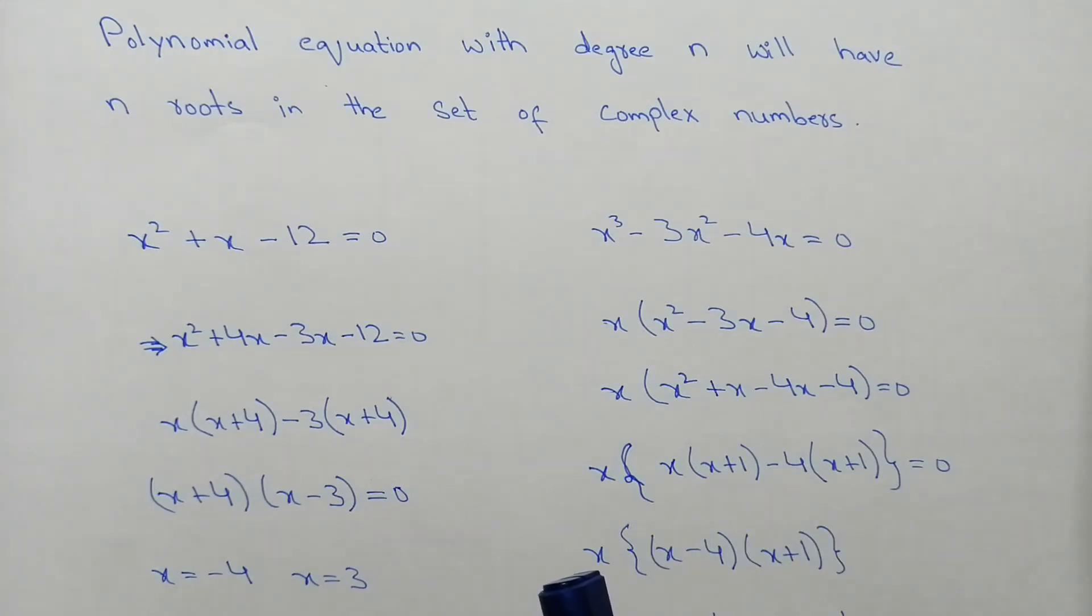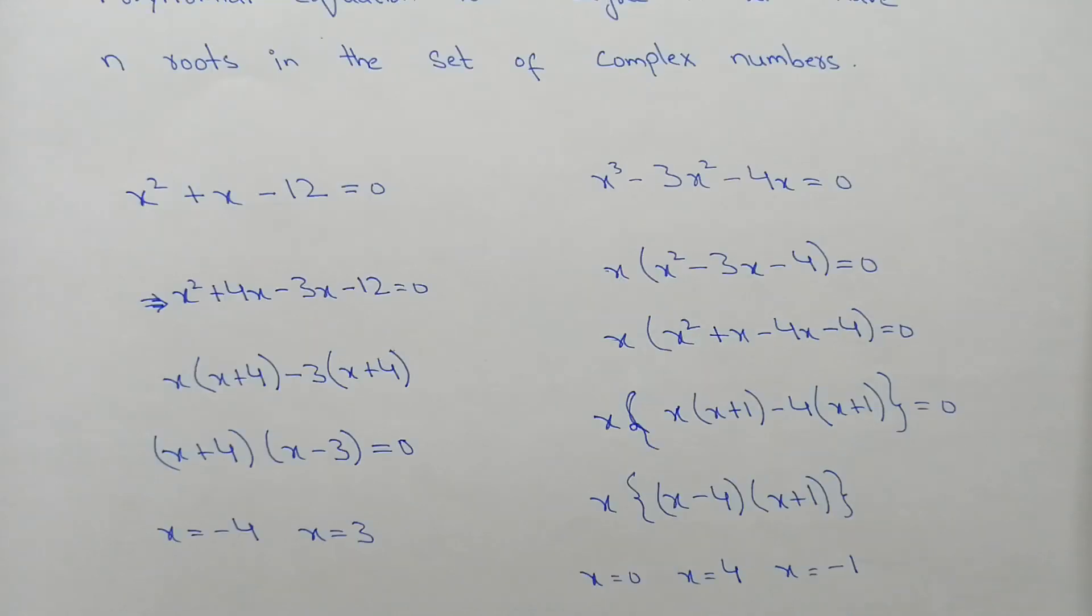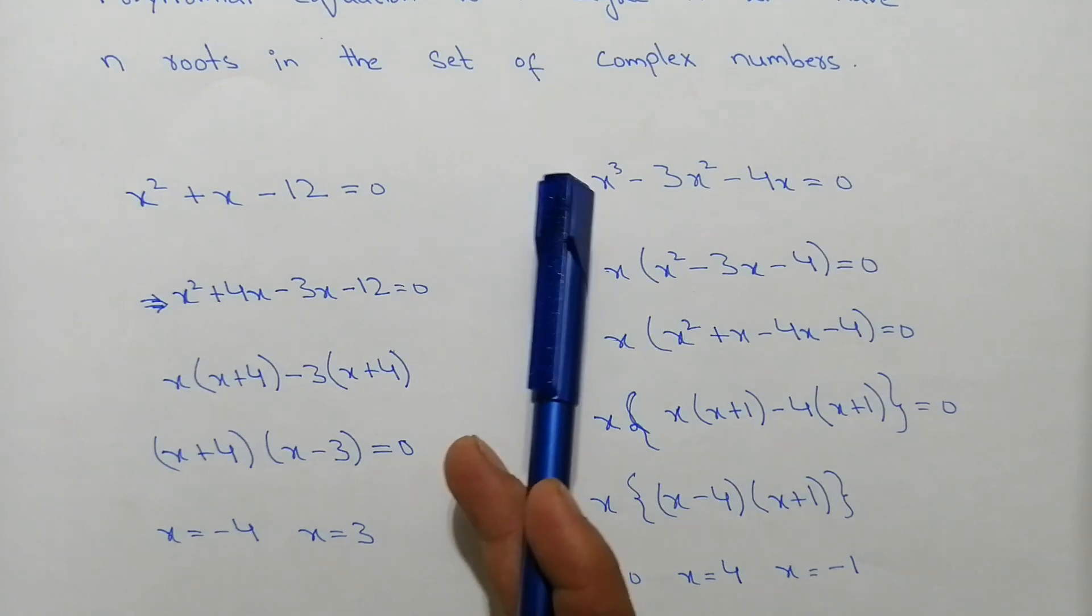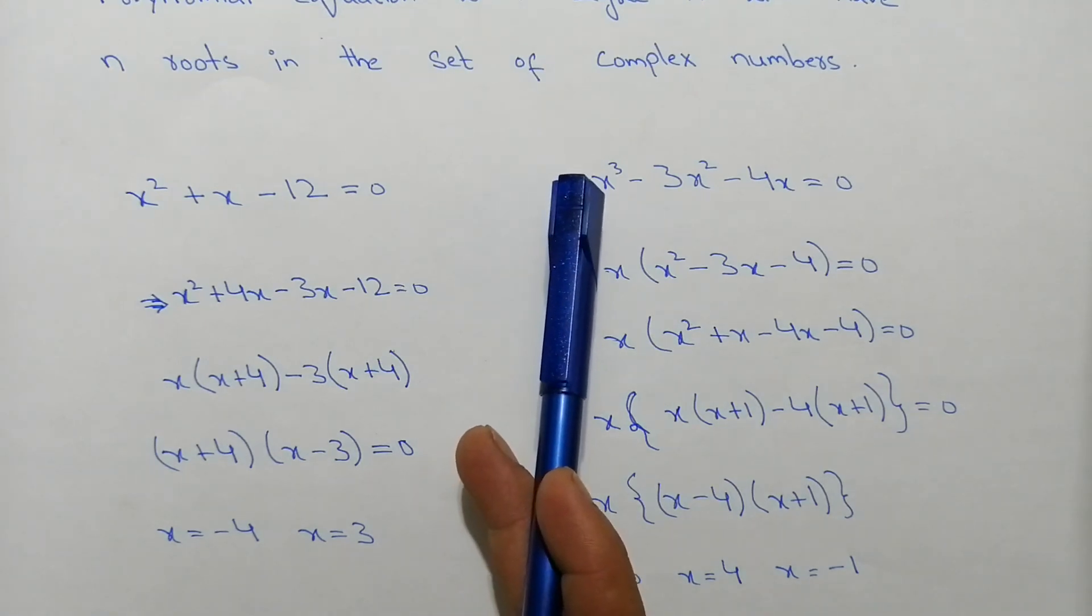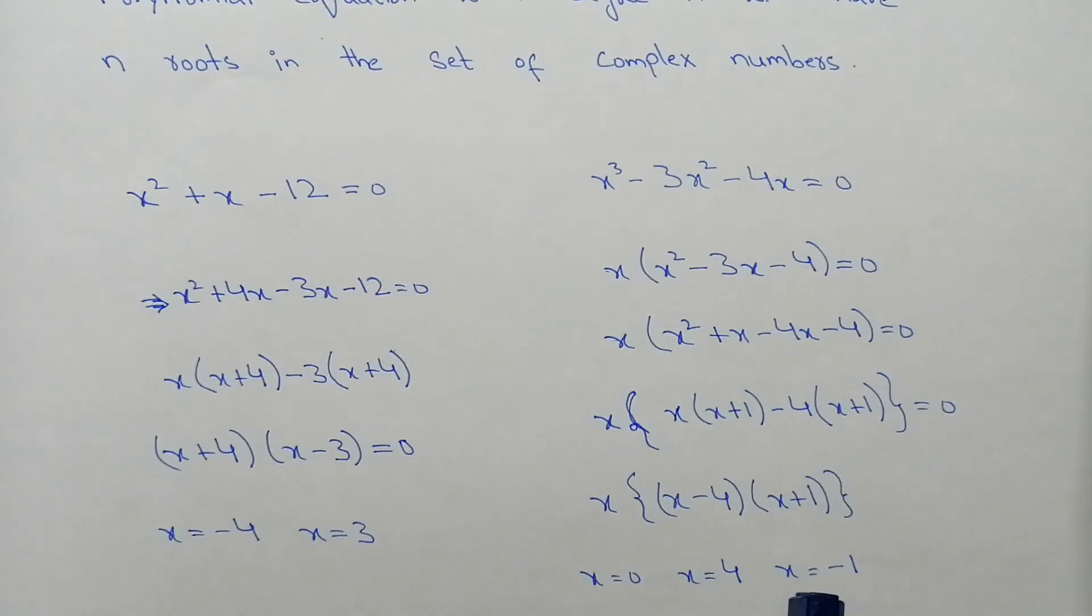Now here notice one thing that we have the 3 roots: x is equal to 0, x is equal to 4, and x is equal to minus 1. So here we have the highest degree that is power 3, so we have the 3 roots over here.